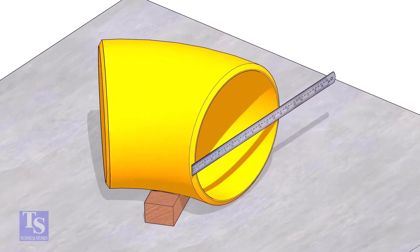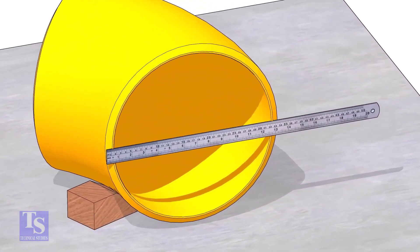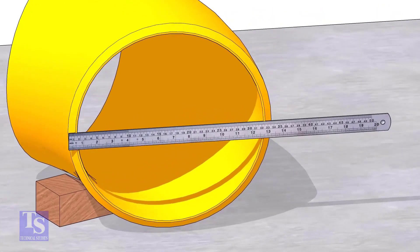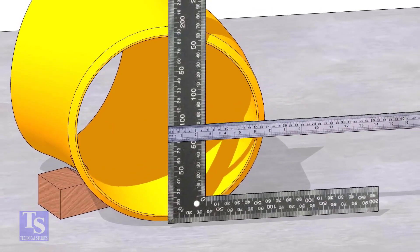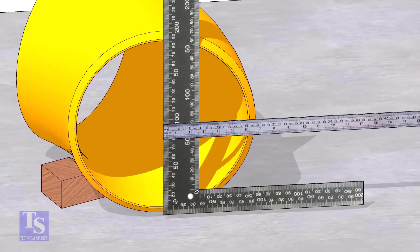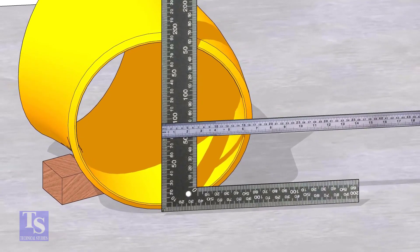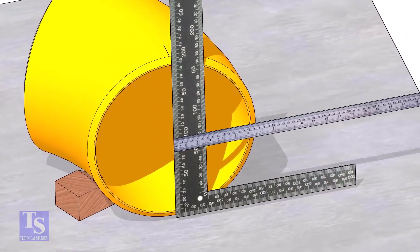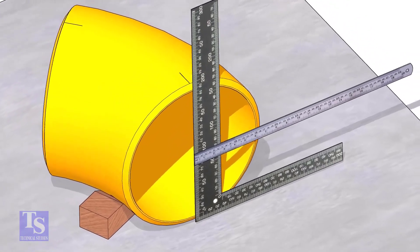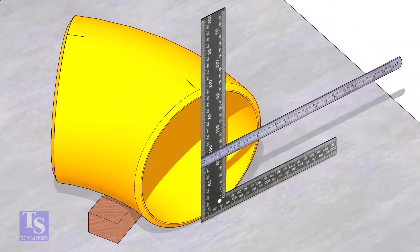Measure the OD. Put a right angle at the middle of one face of the elbow. Make sure the edge of the right angle is exactly at the center. Draw a line where the right angle edge touches the elbow face on the top and bottom side.